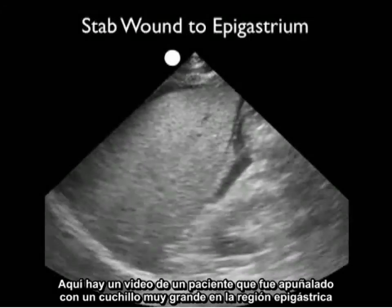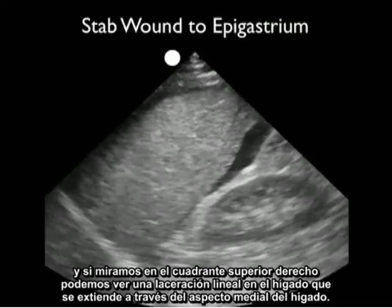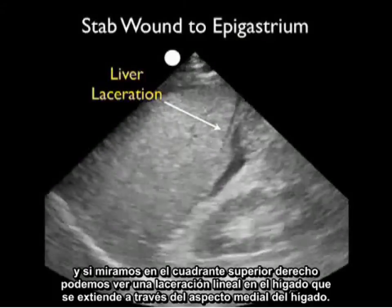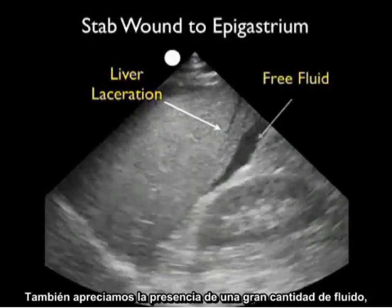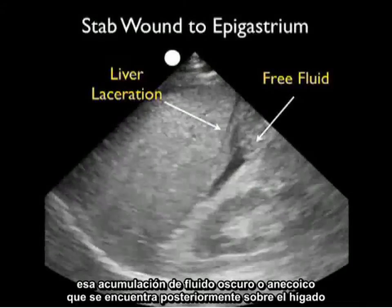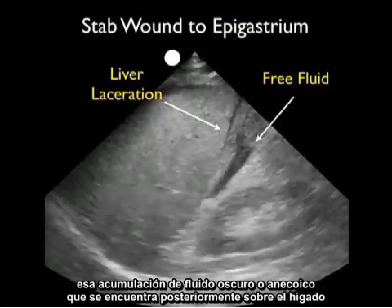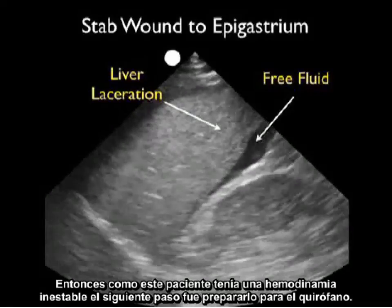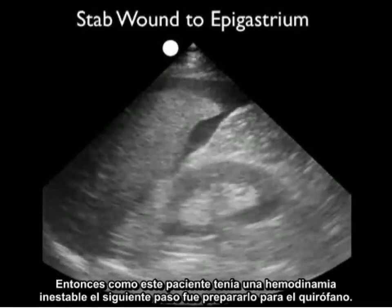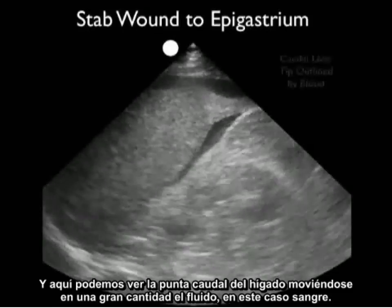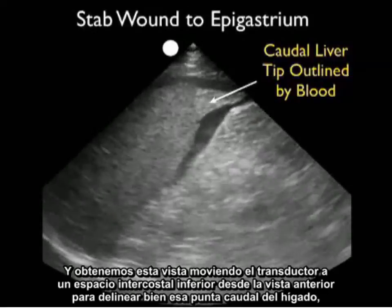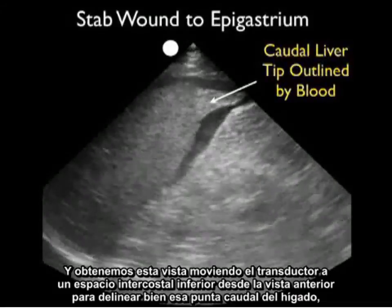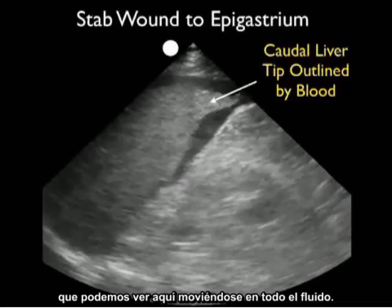Here's a video clip from a patient who was stabbed with a large knife to the epigastric region. As we look at the right upper quadrant, we can see a linear liver laceration extending through the medial aspect of the liver. We also appreciate a large amount of fresh fluid — that dark or anechoic collection — layering posteriorly to the liver and extending into Morrison's pouch, the hepatorenal interface. As this patient had unstable hemodynamics, the next move was to package for the operating room. Here we can see the caudal tip of the liver waving around in all the fresh blood, obtained by moving the probe one intercostal space inferior to well delineate that caudal tip.